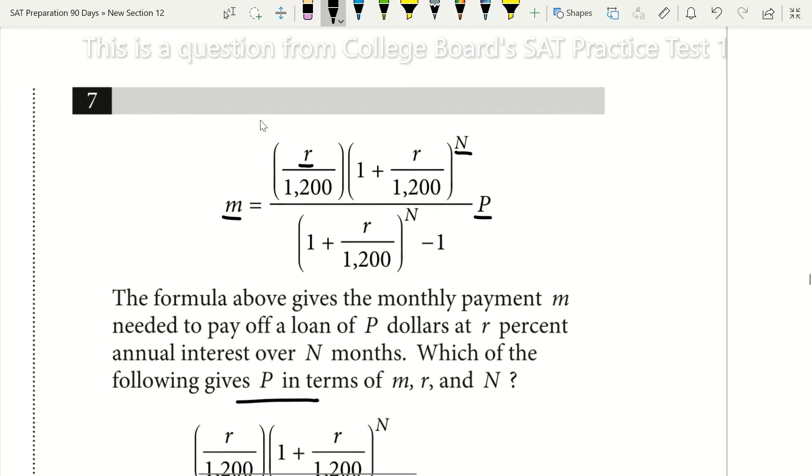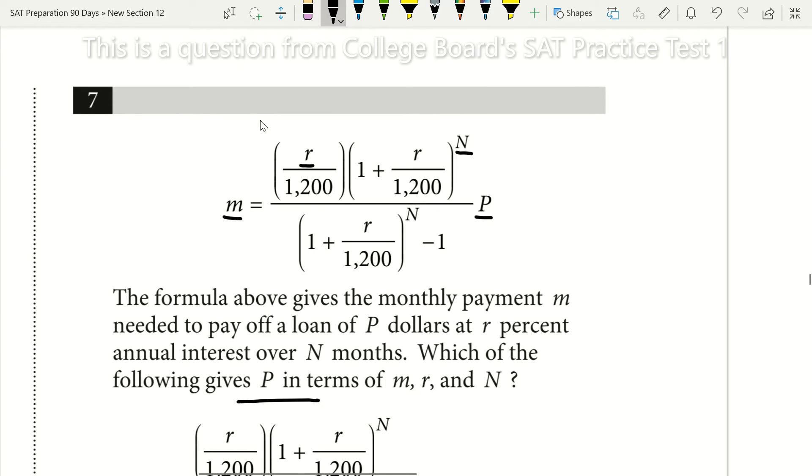Now you may be looking at this equation thinking that's a lot of numbers, that's going to be tough to solve for p, but it really isn't. Take a look at this. What if I was to say m equals 1 over 2 times p? Well, in order to solve for p, I would just multiply each side by the reciprocal, which is 2 over 1. When I do that, I'd just be left with 2 over 1 times m equals p.